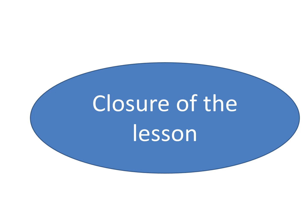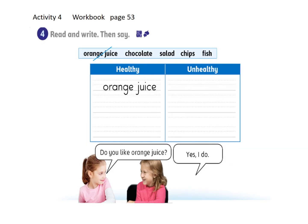Now we come to the closure of the lesson. Read and write the words in the table: healthy or unhealthy? Orange juice: healthy. Chocolate: unhealthy. Salad: healthy. Chips: unhealthy. Fish: healthy. Very good.